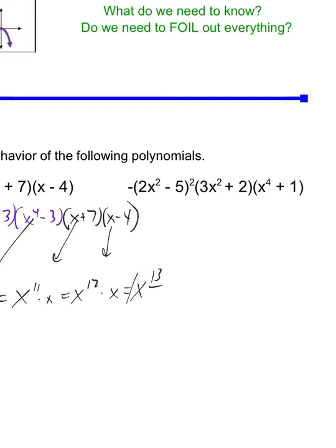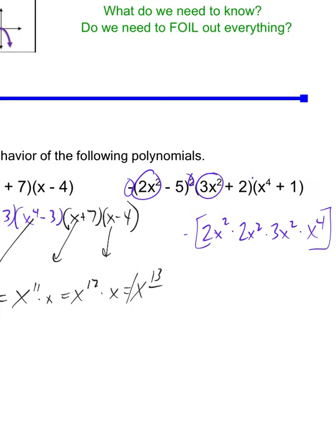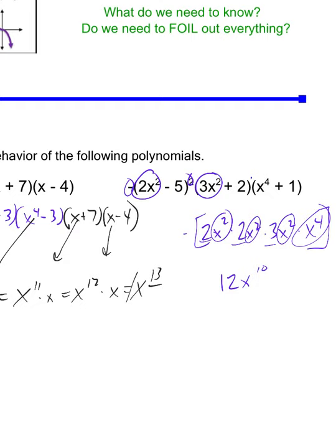This last one requires a little more care because of the negative out front. We have 2x squared appearing twice, times 3x squared once, times x to the fourth — but all of those have a negative out front, so we multiply by negative 1 at the very end. So 2 times 2 times 3 is 12; x squared times x squared is x to the fourth; times another x squared is x to the sixth; times x to the fourth is x to the tenth. With the negative out front, it's really negative 12x to the tenth — an even exponent and a negative leading term.